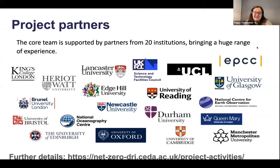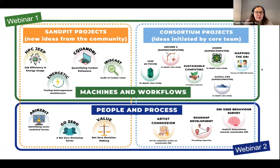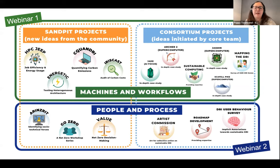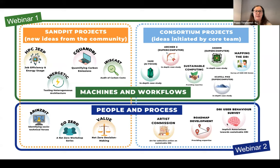We've got lots of project partners — a logo soup of all of them that we have partnered with. We've got about 40 researchers from 20 different institutions, which brings a huge range of experience to the project. The green box covers projects from Tuesday's webinar one, which fall under a theme of machines and workflows or technical and operational challenges. All the ones at the bottom are focused in today's webinar two — about people and processes, and community and organisational challenges.